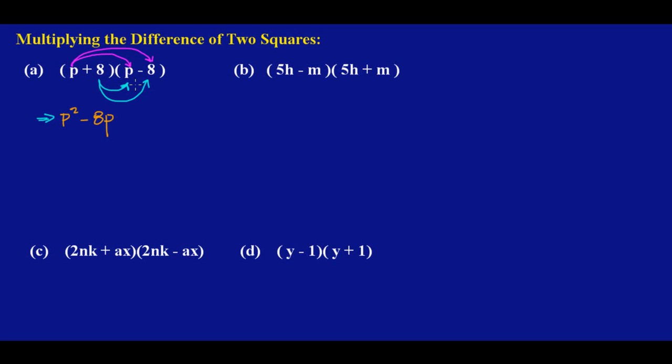So I'm using 8 now to multiply the same two terms, so 8 times p I'll have a positive 8p, and 8 times negative 8 will give me a negative 64.